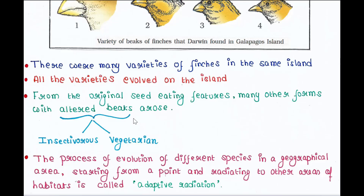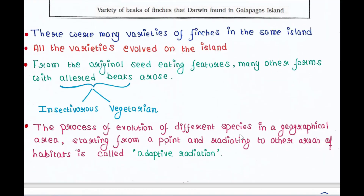This enabled certain birds to become insectivorous, and some remained vegetarian as well. So they flew to other parts of the islands to have insects or plants and enjoyed their food. This process of evolution of different species in a given geographical area, starting from a point and radiating to other areas of habitats, is called adaptive radiation.